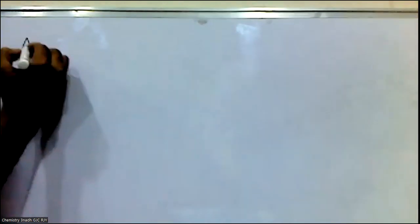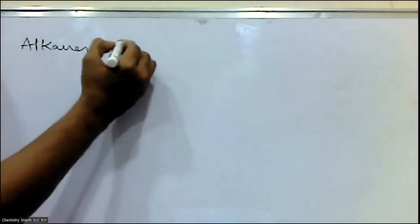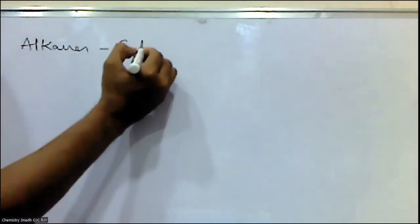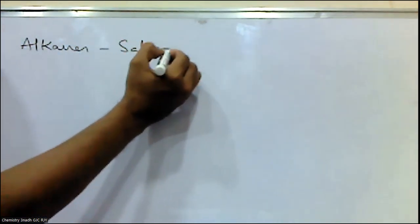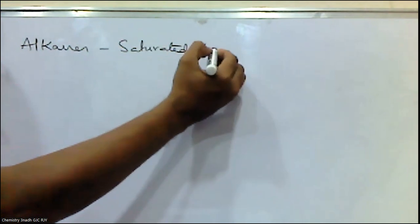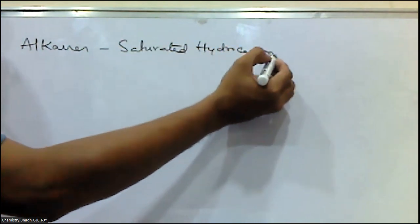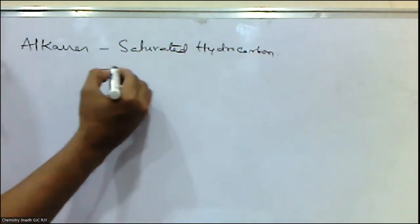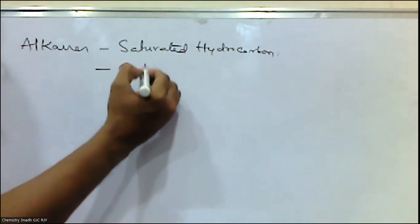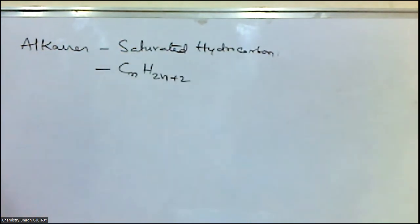We know that alkanes are the saturated hydrocarbons, and they have the general molecular formula CnH2n+2.